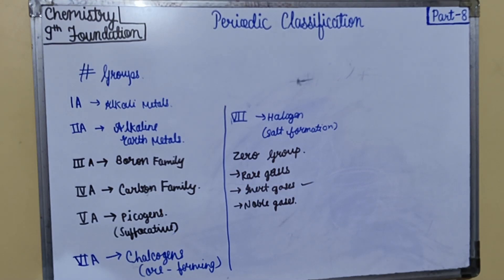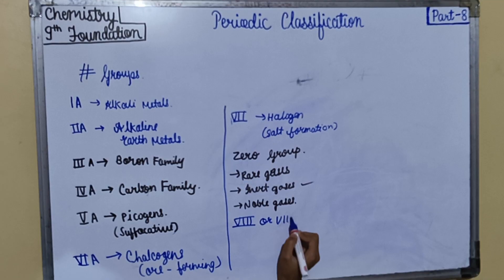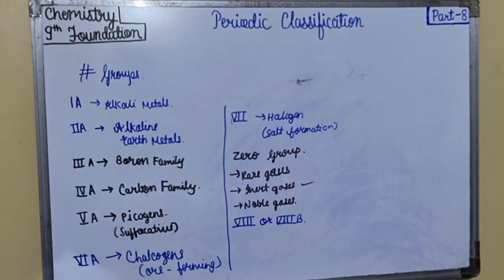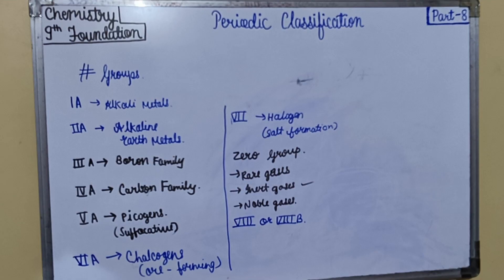Then the 8B group consists of the iron triad, ferrous metals, platinum triads, and platinum metals. The 8B group consists of three triad series. The first triad series Fe, Co, Ni are called ferrous metals, and the second and third triad series Ru, Rh, Pd, Os, Ir, Pt are called platinum metals.